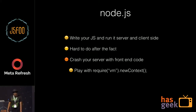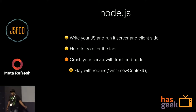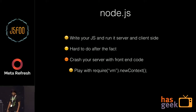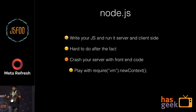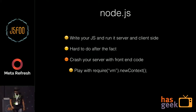You'll start noticing your requests per second are dropping pretty drastically. For this we had a small solution: Node ships with a module called vm, which allows you to load untrusted code inside a sandbox, and you can run your code that way.